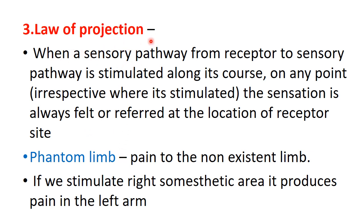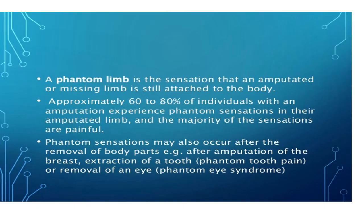The law of projection explains phantom limb pain. If a limb is amputated and there are irritated nerve terminals, the person feels that the limb still exists and experiences pain in the fingers. Even if the somesthetic area of the cerebral cortex is stimulated, pain is perceived in the left arm. Approximately 80% of individuals with an amputation experience phantom sensations in their amputated limb, and the majority of these sensations are painful.